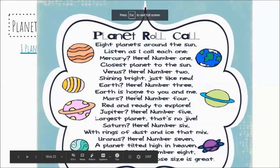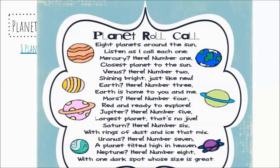All right, now since we have learned all eight planets, we are going to do a poem called Planet Roll Call. I'll go ahead and read it first, and then I'll read it one more time for you to join in. So, here we go. Planet Roll Call. Eight planets around the sun. Listen as I call each one. Mercury. Here. Number one. Closest planet to the sun. Venus. Here. Number two. Shining bright just like new. Earth. Here. Number three. Earth is home to you and me. Mars. Here. Number four. Red and ready to explore.